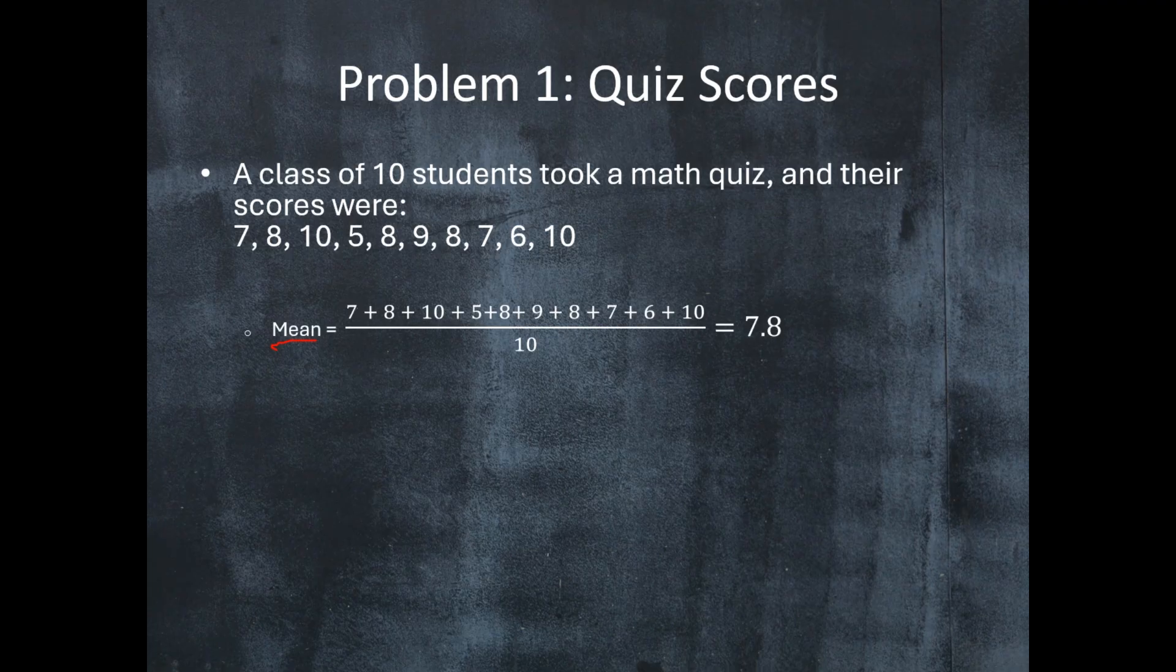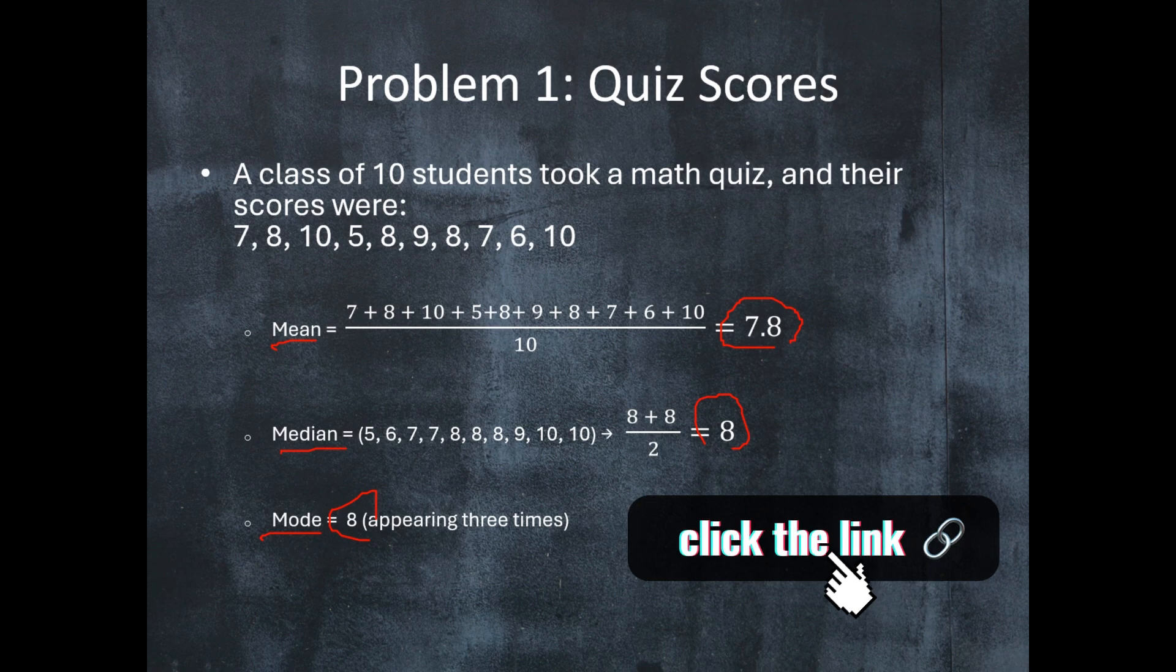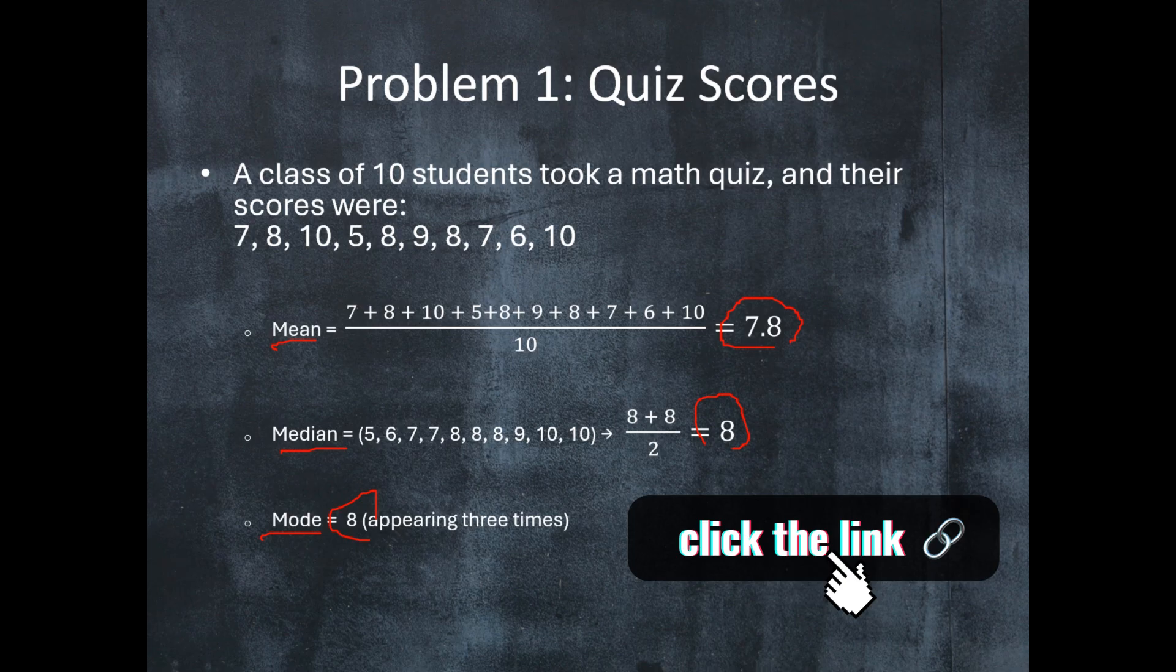The mean for this data set is 7.8. The median is 8 and the mode is also 8. Now, if you're not yet familiar with how to compute the mean, median, and mode of a data set, don't worry. I already made a separate video that explains each one step by step. You'll find a link to that lesson in the description below. But for this lesson, we will proceed with our discussion.